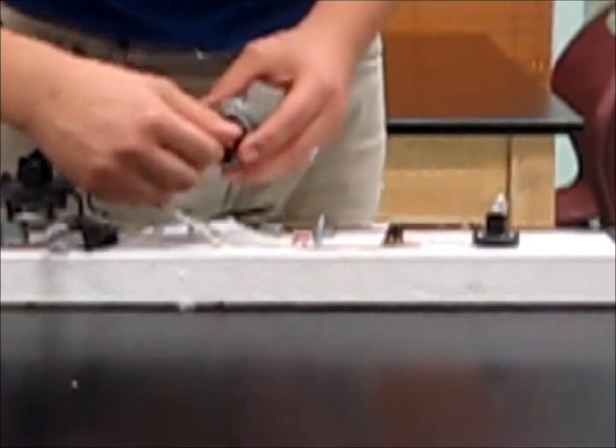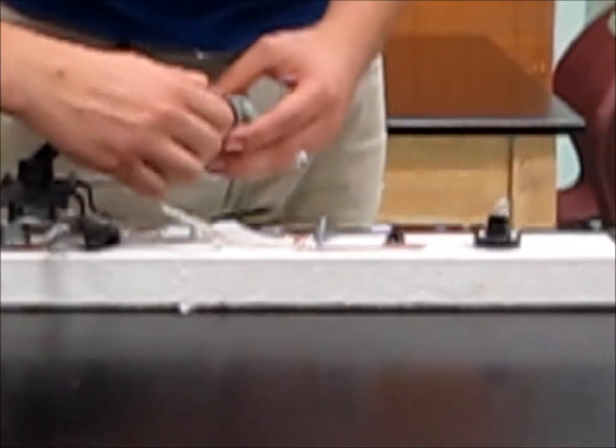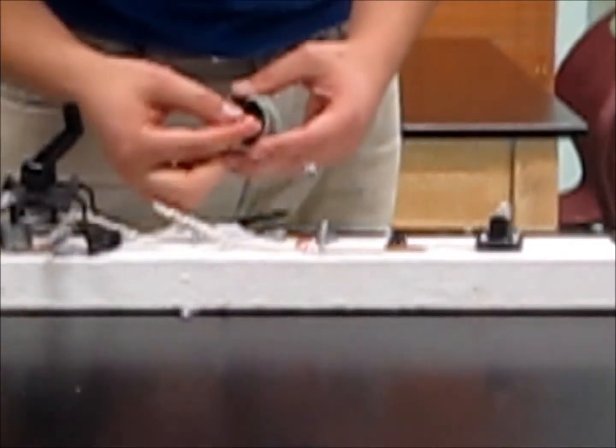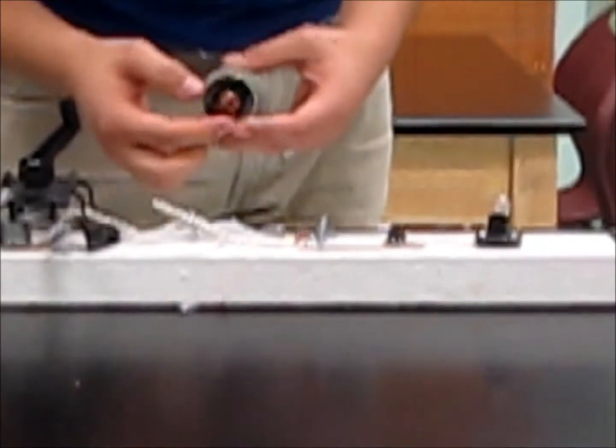And this one spins the copper coil instead of a magnet, but it creates the same electrical current. And you can see, if it spins fast enough, it creates the current.